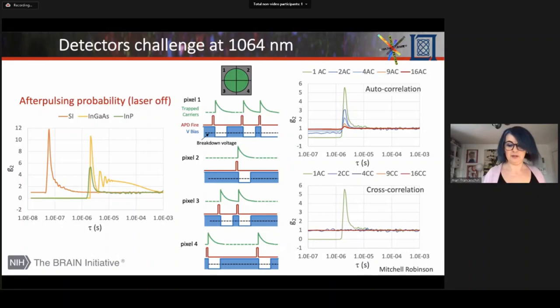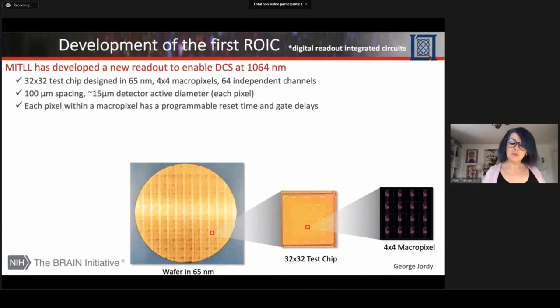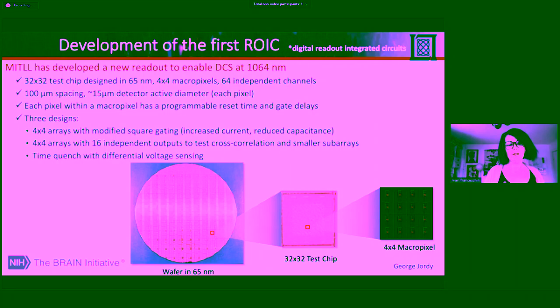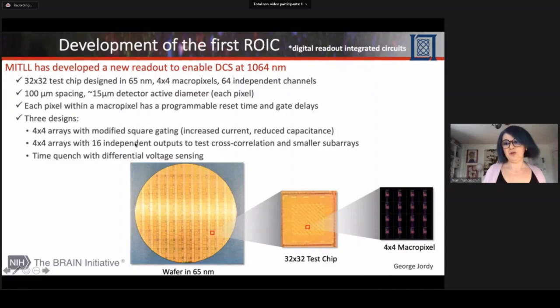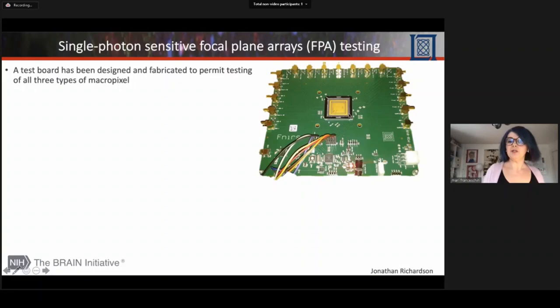Lincoln Lab, in the last year, has developed the first digital readout integrated circuit ROIC with this macro pixel. So each detector pixel has 16 micro pixels. And they used four designs, one for the autocorrelation, one with 16 independent outputs to test the cross correlation, and one that is a balanced detector to further decrease this afterpulsing. During the last year, they built a test board to test the functioning of the ROIC, and they verified that it works as expected.